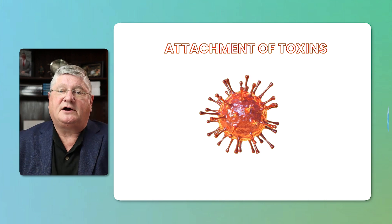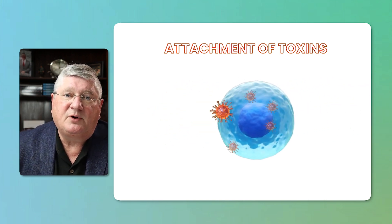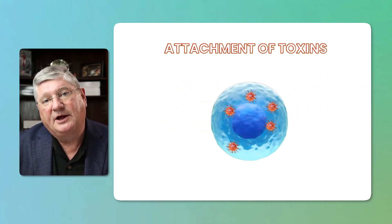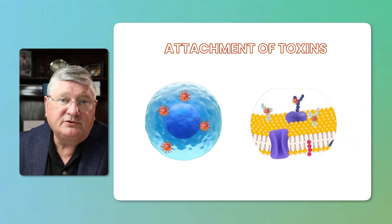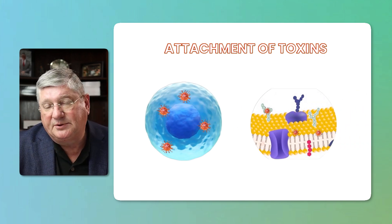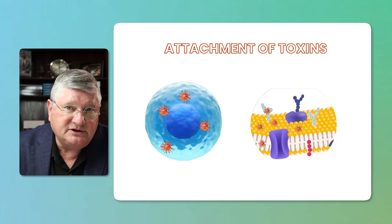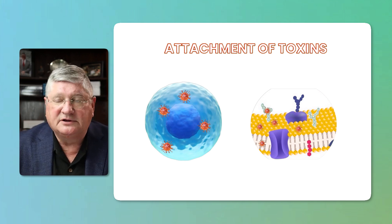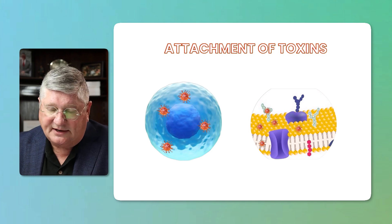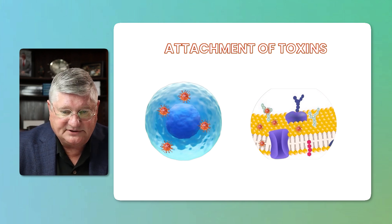Another thing that can directly happen, which may or may not have a free radical component, is attachment of toxins. Toxins love to get on your cell membranes and hang out there. Some like the protein portions, some like the lipids, some like the phospholipid parts, and some just like the phosphates. But toxins just love getting in there and wrecking havoc with your cell membranes.